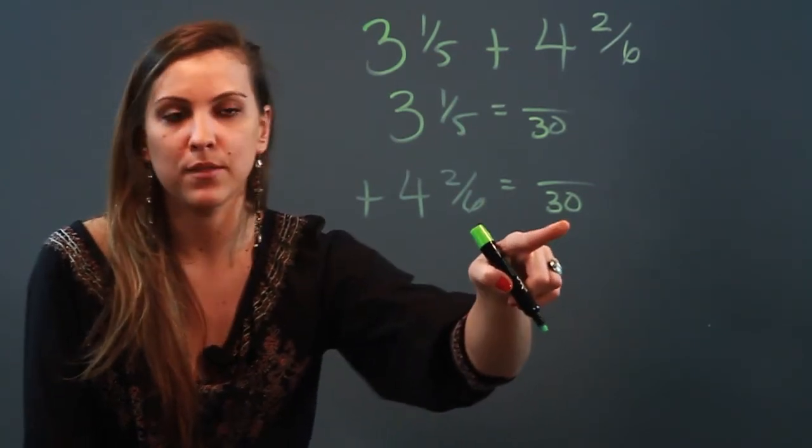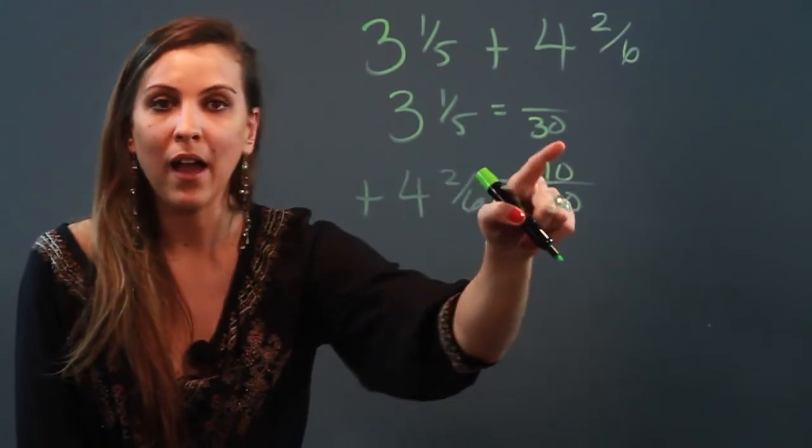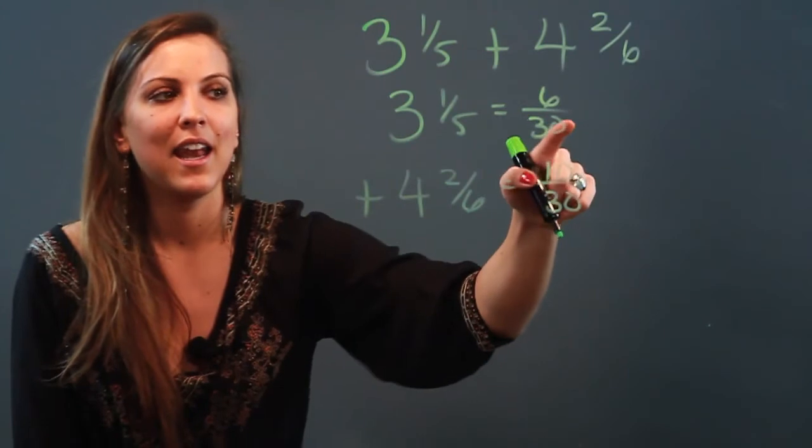How did I get from 6 to 30? I did times 5, so I'm gonna do 2 times 5, which is 10. How did I get from 5 to 30? I did times 6, so 1 times 6 is 6.